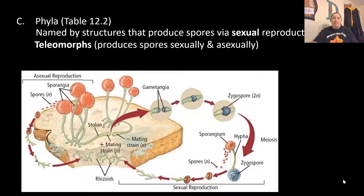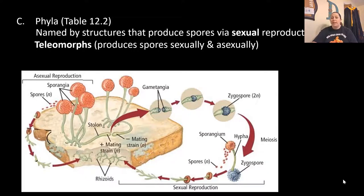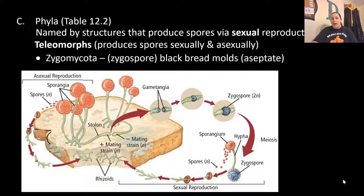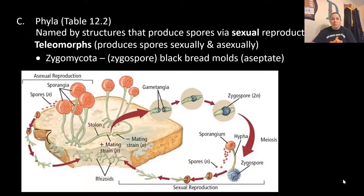The phyla of fungi are named by structures that produce spores through sexual reproduction. Telemorphs produce spores both sexually and asexually. The Zygomycota produce zygospores — this is what we see with black bread molds. They are aseptate and produce spores in a sporangia. There is a part of the life cycle involving sexual reproduction.